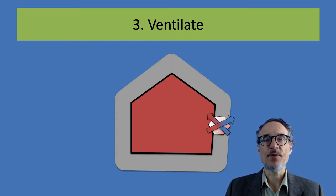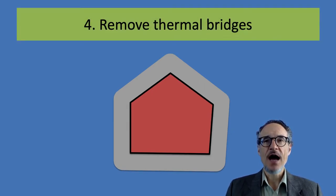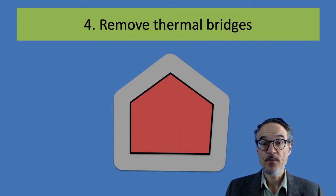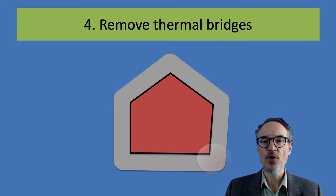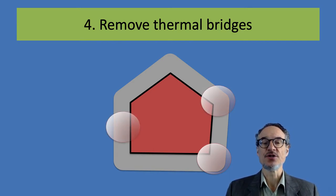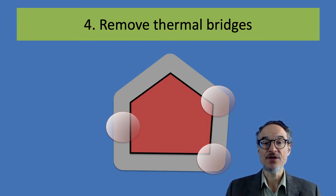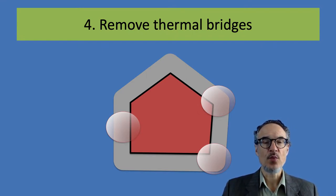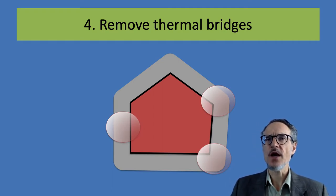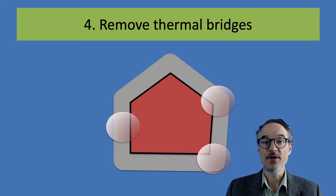The next important thing to worry about for Passive House is thermal bridges. As you get more insulation, an airtight building, and heat recovery from ventilation, it becomes important what happens at the corners and the junctions. You need to make sure when you're building that you don't have any gaps or change from one material to another, or where the window is installed. You need to watch out for all of these thermal bridges and build without thermal bridges.